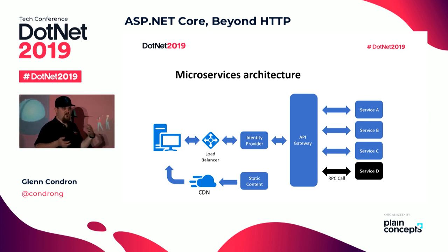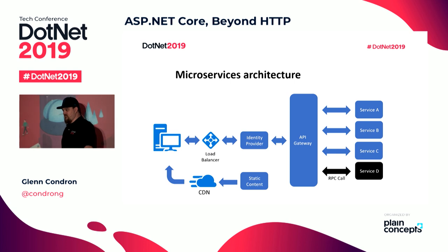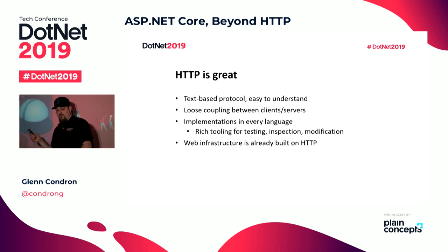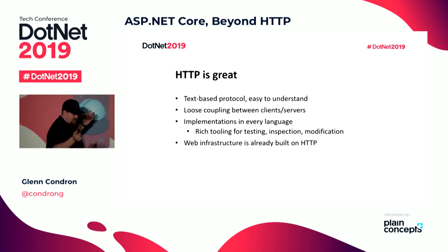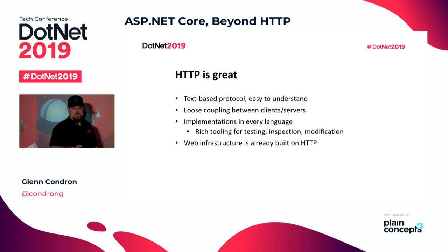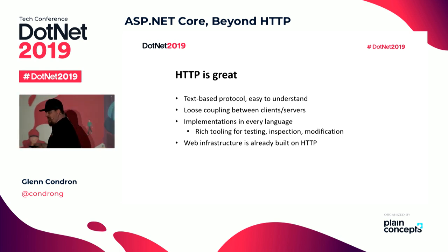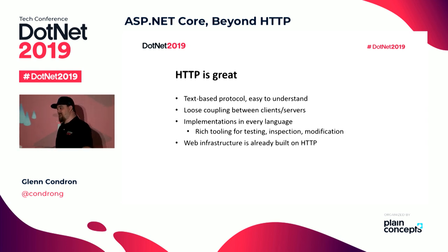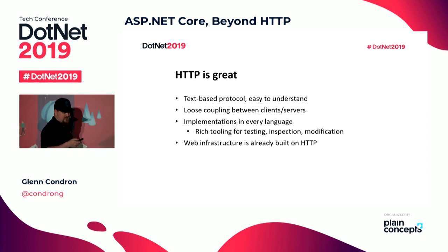So why should we introduce another thing? Why shouldn't that black line just be Web API with HTTP and JSON? HTTP is great — it's a text-based protocol, it's easy to understand, it's loose coupling. Every language in the world has a JSON library. Rich tooling for testing, inspection, and modification. It's ubiquitous and exists everywhere. Where it's not so great is if all I've got is two machines talking to each other — why does the readability of the payload matter? And textual protocols can be a little bit chatty and inefficient.